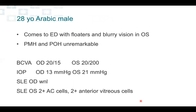The right eye shows normal vision, pressure, and anterior segment. The left eye has quite impaired vision at 20/200, pressure slightly elevated, and inflammation in the front — two plus cells in the anterior chamber and two plus cells in the anterior vitreous.